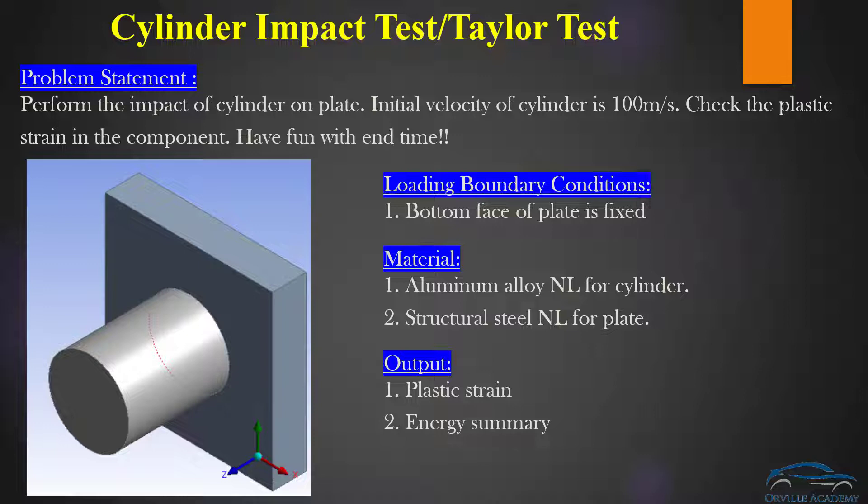With explicit analysis, one crucial thing that we require is the end time. For the time being we are going to assume that we don't have the end time, and then we will do some iteration to understand how one can decide the end time. For the boundary condition we are going to simply fix one end of the plate. For the material, we are going to apply aluminium alloy nonlinear material for the cylinder and structural steel nonlinear material for the plate. This problem — simulating the impact of cylinder on the plate — is also commonly known as a Taylor test.